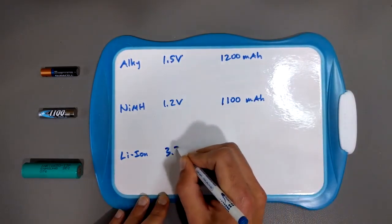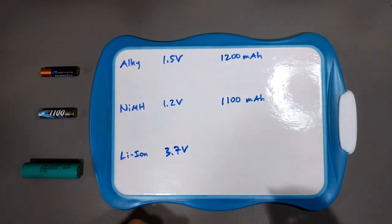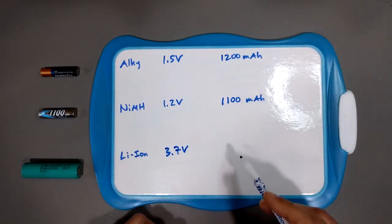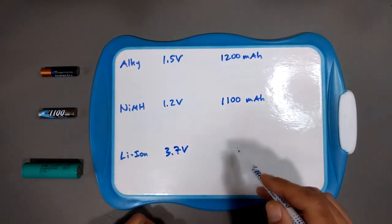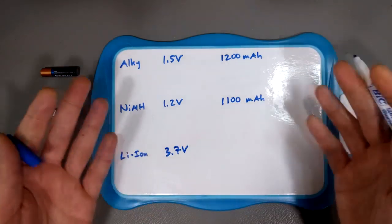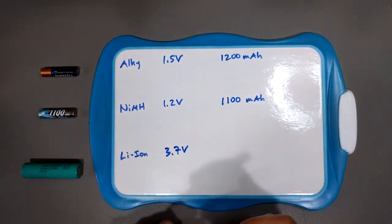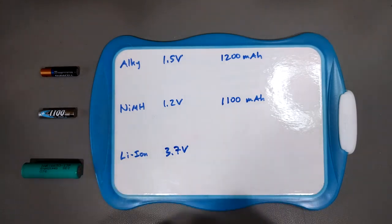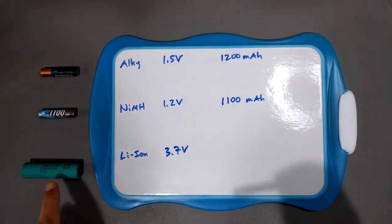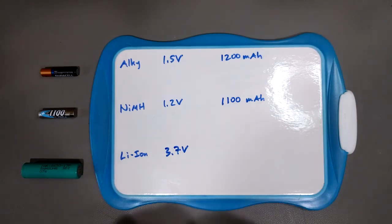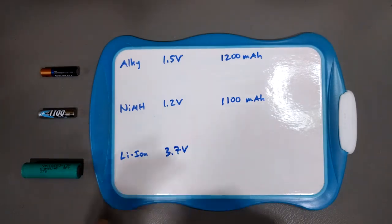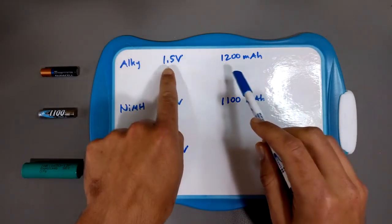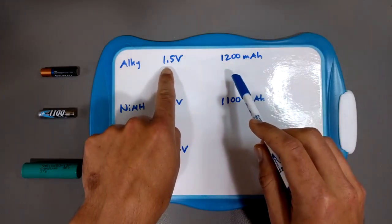And of course, lithium ion, a single cell like this guy, he's 3.7 volts. And the currents, there's all kinds of different current ratings for lithium ion cells. So, you probably notice here that, well, since power equals voltage times current, if you multiply 1.5 by 1200, you get a bigger number than if you multiply 1.2 by 1100, right?